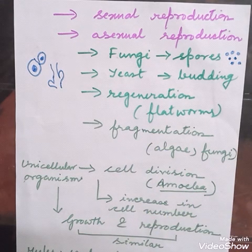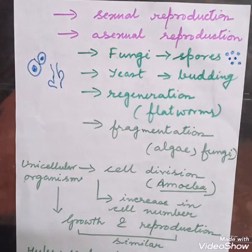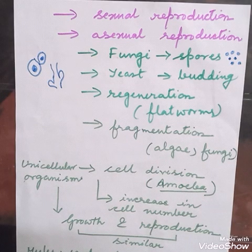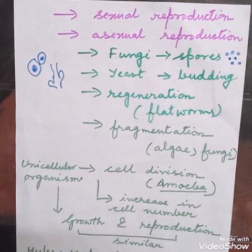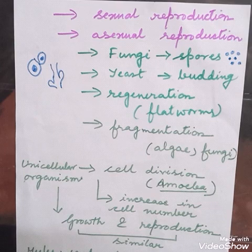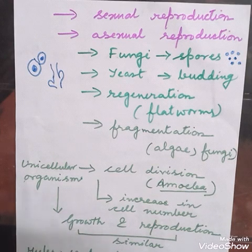Next is fragmentation, which also happens in algae and fungi. If a small piece of the organism is cut, that small piece which is cut is capable of giving rise to a new individual of algae or fungi. We are discussing this because it is part of the process of asexual reproduction.